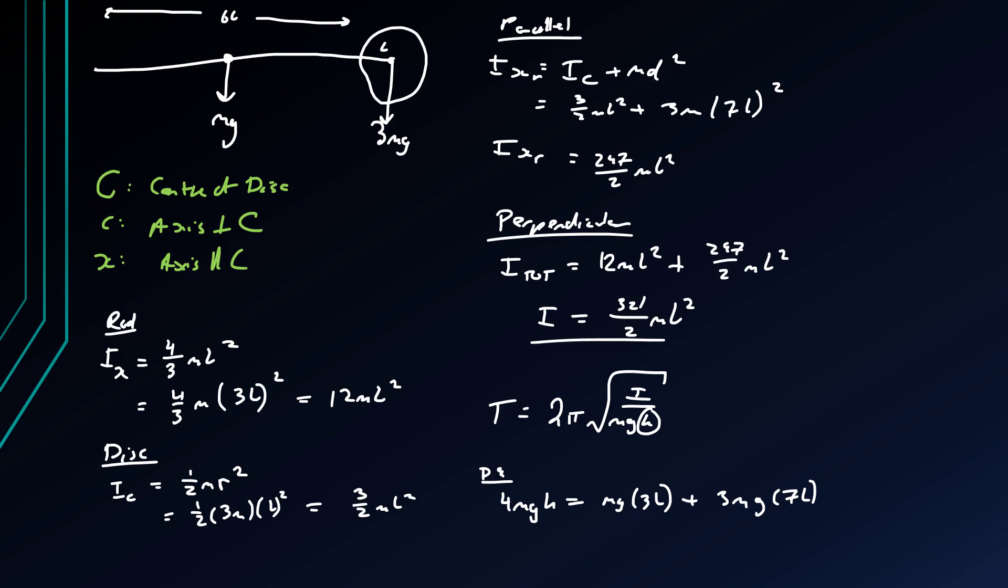So we're essentially taking it from point where it's hinged, which I should have denoted as X at the beginning, but whatever. So now that we have 4mgh is 3 plus 21 is 24, uh 34mgl, and so we can deduce that h must be 6l which is indeed here, so this is going to be our center of gravity.